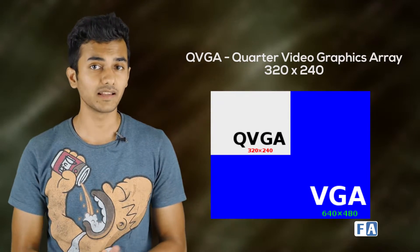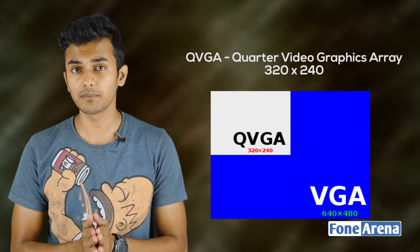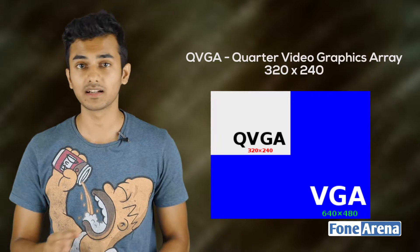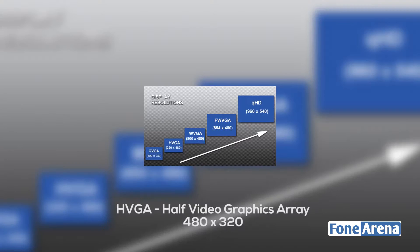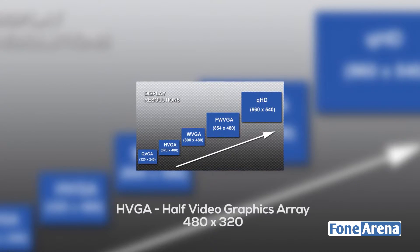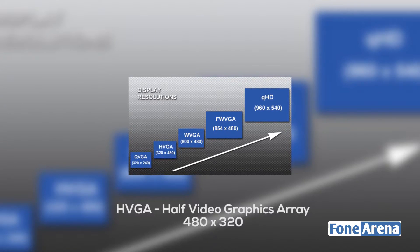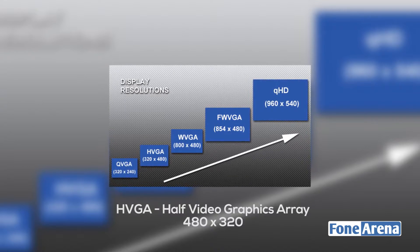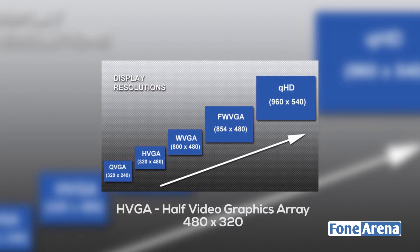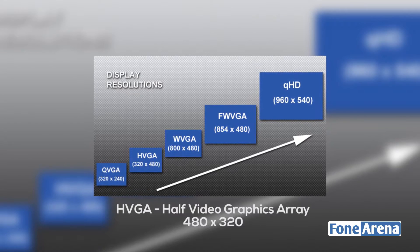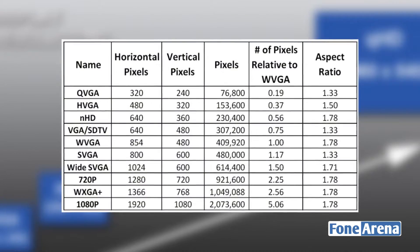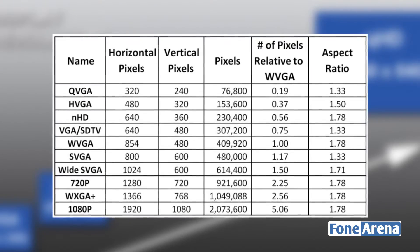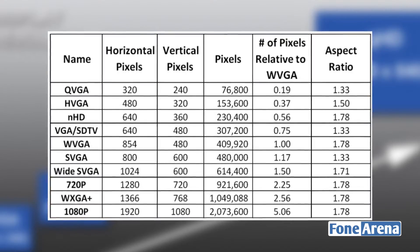If VGA has a certain resolution, QVGA has a quarter of that pixel count — that's why it is called QVGA. The second type is HVGA, Half Video Graphic Array. Its resolution is 480x320 pixels, which is half of the VGA resolution of 640x480.